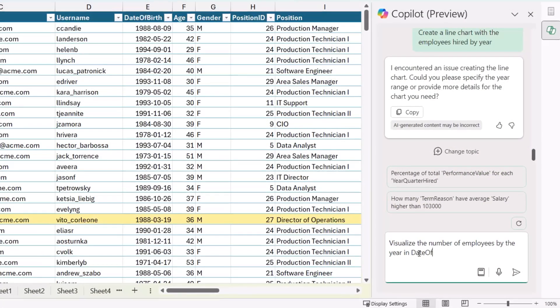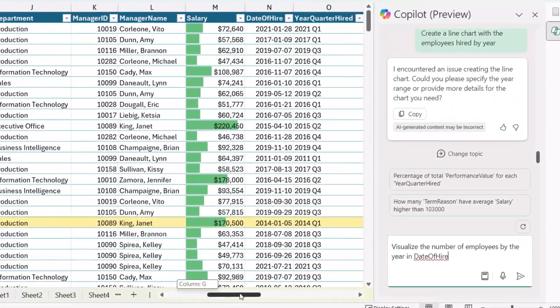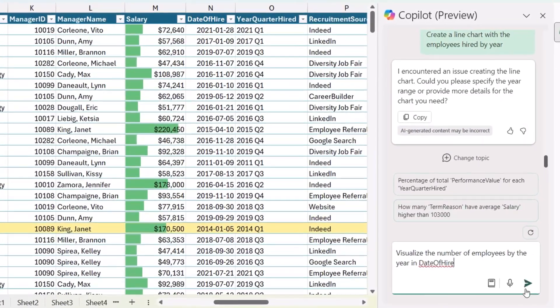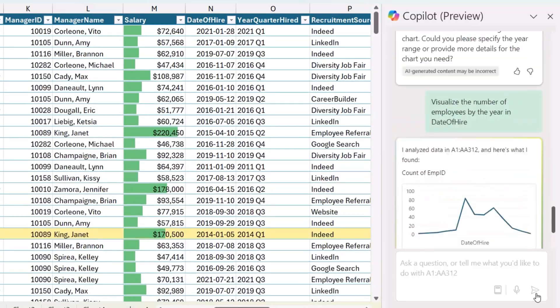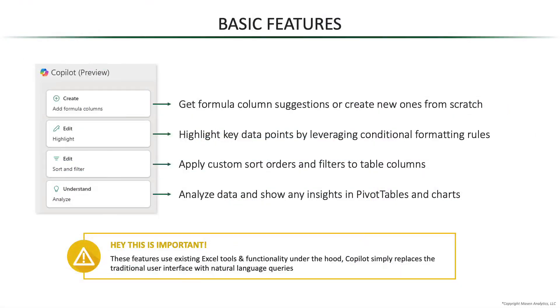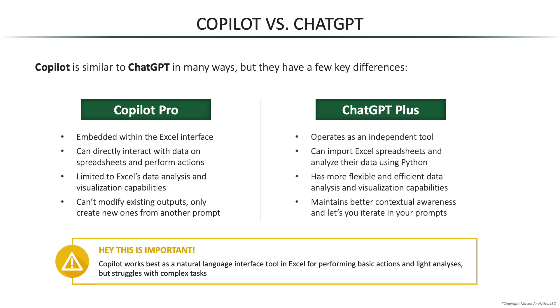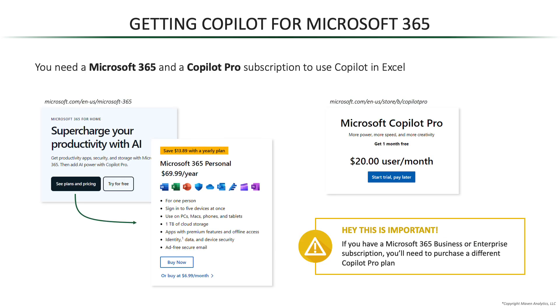This is a hands-on, project-based course designed to help you leverage Copilot and Microsoft Excel to solve real-world data analytics problems. We'll start by reviewing Copilot's basic features and limitations, compare strengths and weaknesses against AI tools like ChatGPT, and get you up and running with Copilot Pro for Microsoft 365 on your machine. From there, we'll dive into each of Copilot's core use cases for data management and analysis.